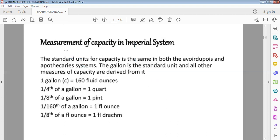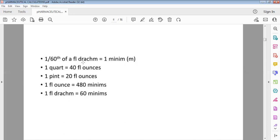Measurement of capacity in imperial system: the standard unit for capacity is same in both avoirdupois and apothecary system. Gallon is the standard unit and all other measures of capacity are derived from it. One gallon means 160 fluid ounces. One-fourth of gallon means 1 quart. One-eighth of gallon means 1 pint. One-sixtieth part of gallon means 1 fluid ounce. One-eighth of 1 fluid ounce means 1 fluid drachm. 1 quart means 1 minimum. 1 quart means 40 fluid ounces. 1 pint means 20 fluid ounces. 1 fluid ounce means 480 minimums. 1 fluid drachm means 60 minutes.